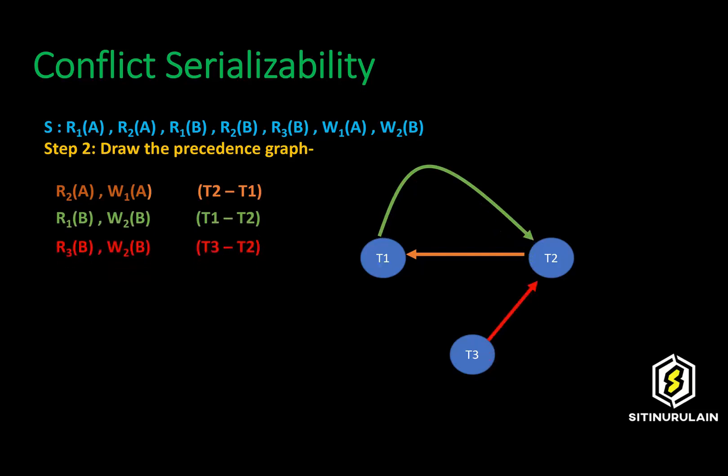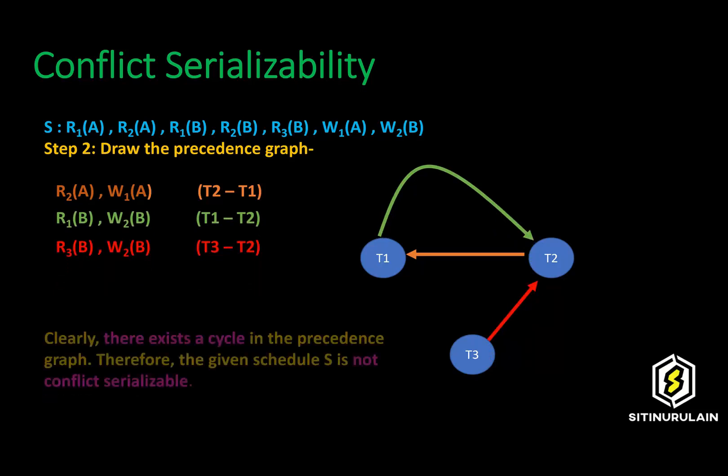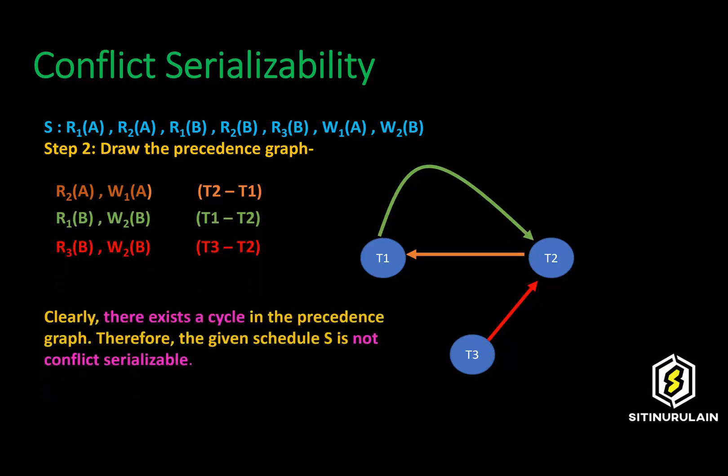In the third operation, we need to create an edge between transaction 3 and transaction 2. In the precedence graph, it is clearly shown that there exists a cycle. Therefore, the given Schedule S is not conflict serializable.